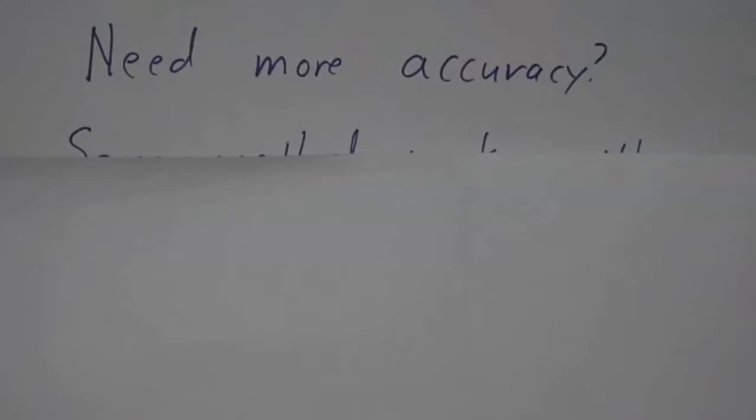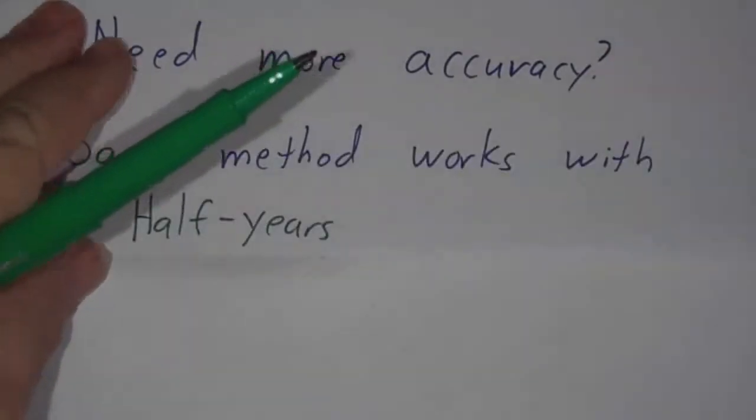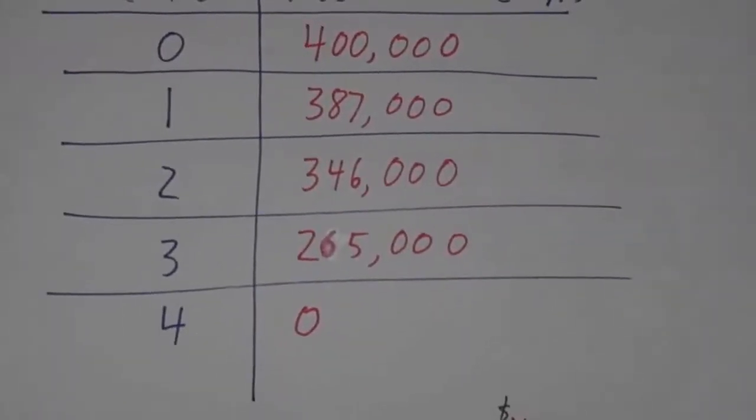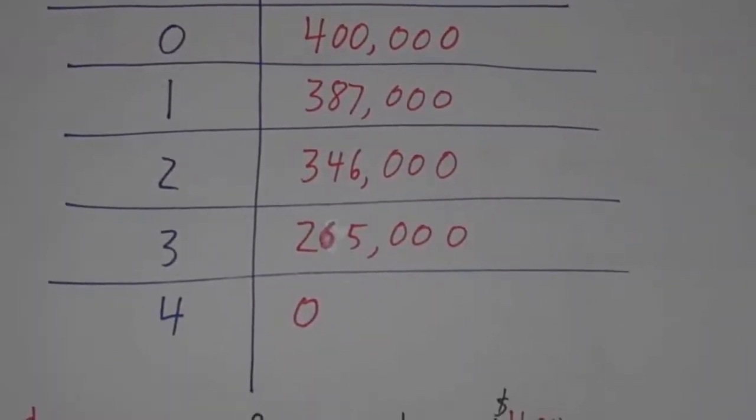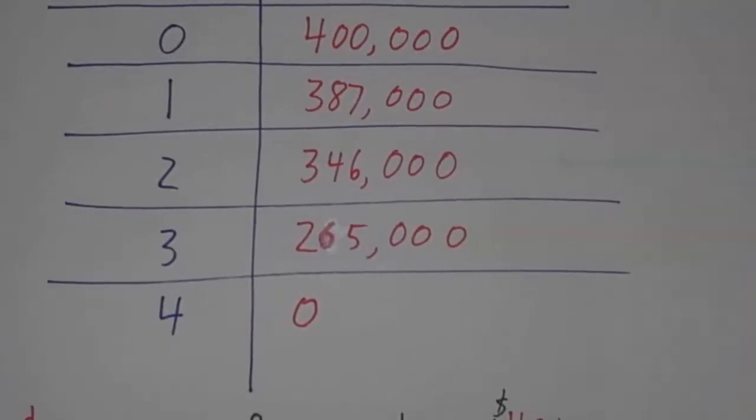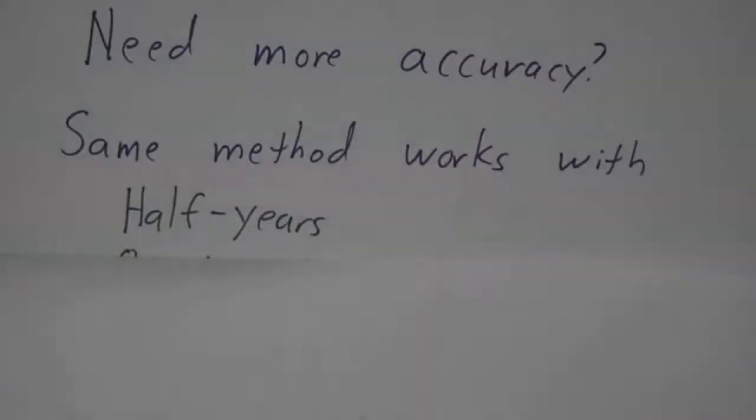What if we wanted more accuracy? Well, we didn't have to do everything by years. We could have done it by half years. We could have taken our table, and instead of just looking at what happens at 0, 1, 2, 3, and 4, look at what happens at 1 half, 1 and 1 half, 2 and 1 half, 3 and 1 half. Fill in more things. Have 8 half years and add them up.